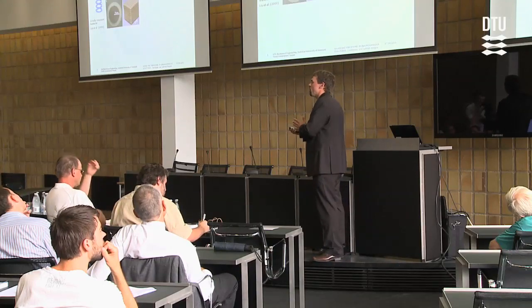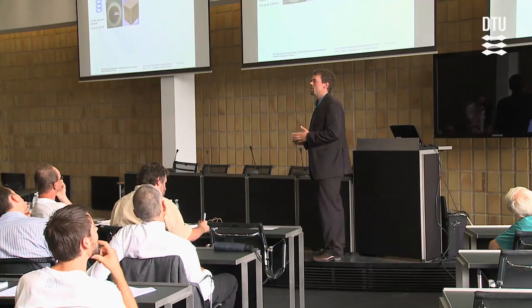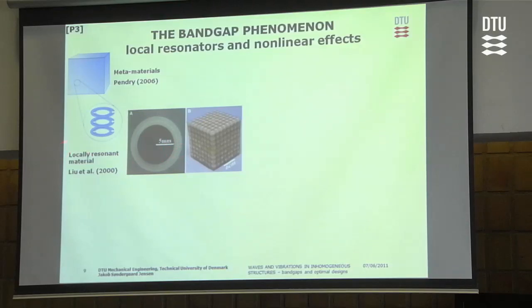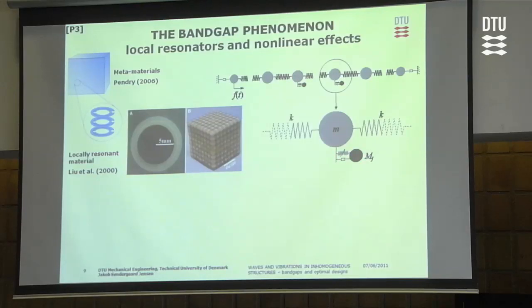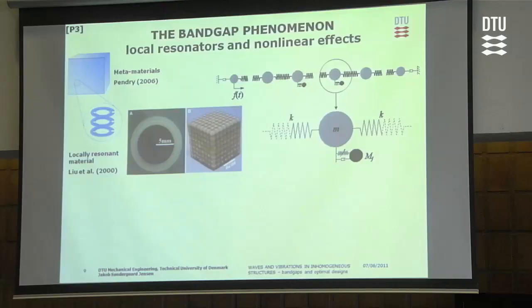We then studied the effect of local resonators, which was attracting a lot of attention both for mechanical structures, known as locally resonant materials, and for electromagnetic materials where it's denoted metamaterials. We studied this in a 1D mass-spring chain with attached oscillators, including nonlinearities — a nonlinear spring and a damper — because large motion of rubber-embedded inclusions could yield high dissipation, and we wanted to see if we could utilize this to increase the damping properties.